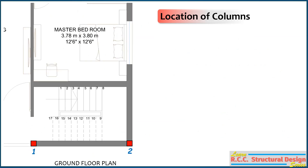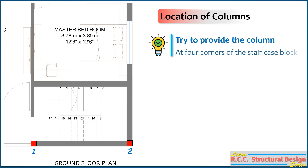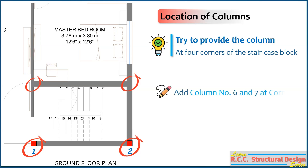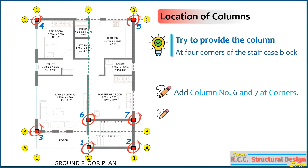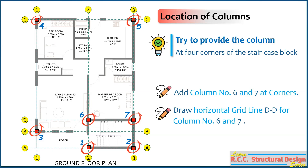Next, if possible, try to provide columns at the four corners of the staircase block, as we require those for the staircase tower. Here, column numbers 1 and 2 are already at the corners of the staircase block. So we can add column numbers 6 and 7 at the remaining corners, and draw horizontal grid line DD for these columns.